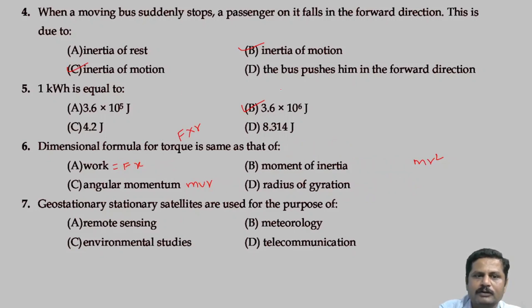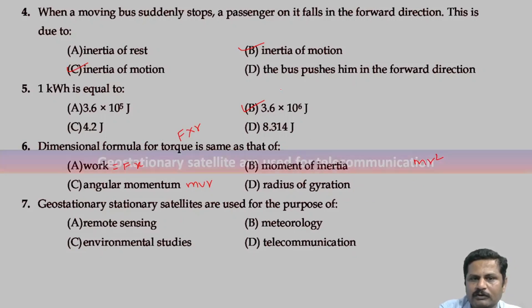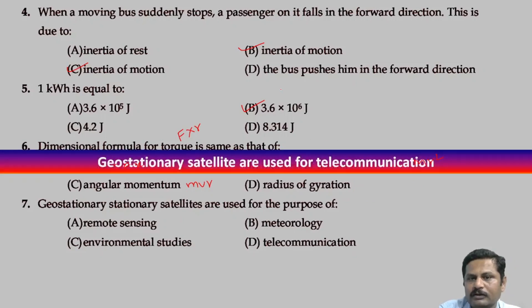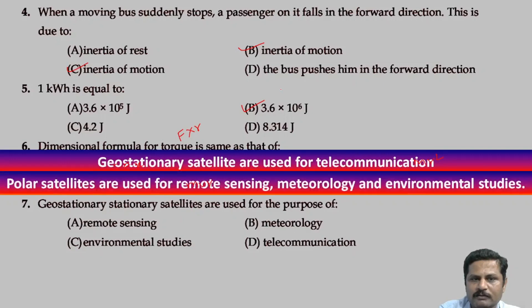Geostationary satellites are used for the purpose of telecommunication, remote sensing, meteorology, and environmental studies. For all these purposes we use polar satellites. So the correct option is D.